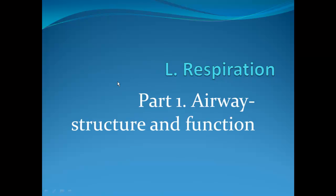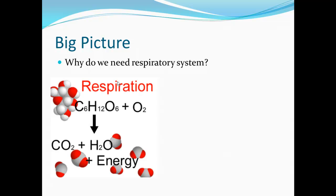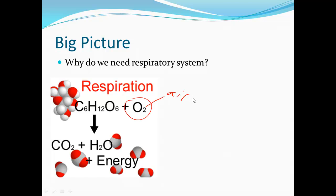This is part one of respiration: the airway. This unit focuses more than any other on structure and function. First, we need to understand why we need a respiratory system. We need it for two specific functions: one, to capture oxygen from the air around us, and then to deliver it to the cells. The most important part of respiration is the burning of glucose with oxygen to produce energy.